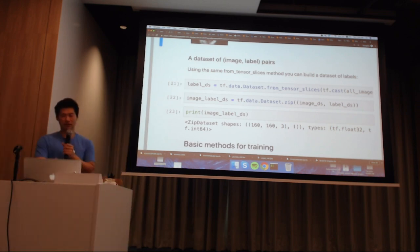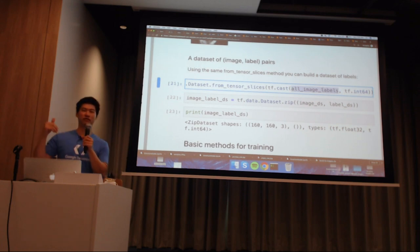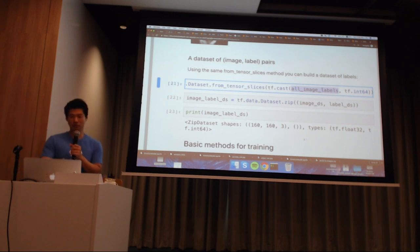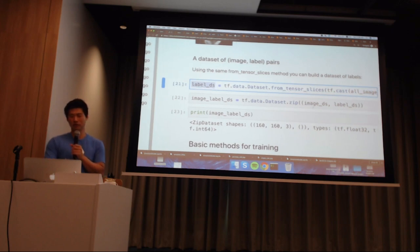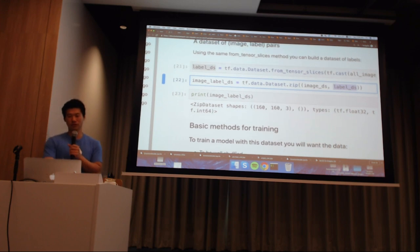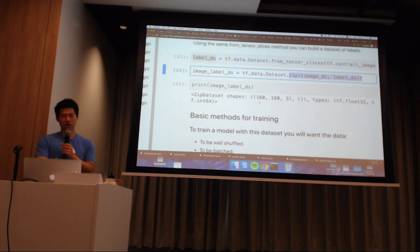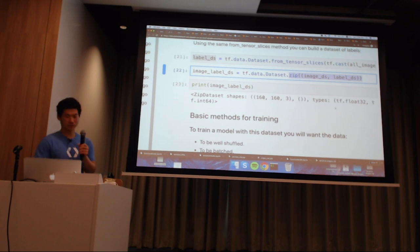Again, tf.data.dataset from tensor slices - this will take in the labels. First we've taken the whole list of image paths and mapped them into image tensors. Now we take the list of labels and map them to a label dataset. So we have an image dataset and a label dataset, put them into a tuple, and zip them together into a zip dataset format - with our images already resized and scaled to 160 by 160 three-channel images, and our labels.